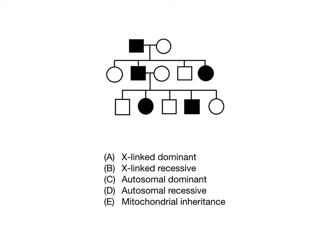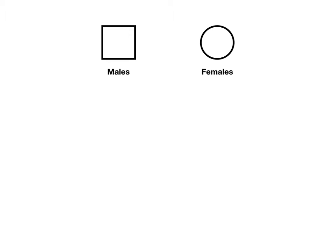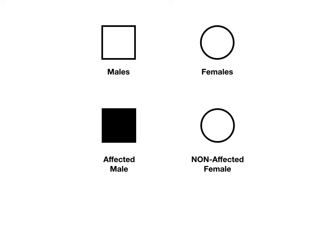Before we get into my system, we need to start with how pedigrees work. If you already know this, it will be a very rapid review, but just in case you're starting from square one — squares represent males and circles represent females. Whether the square or circle is colored in tells you whether they are affected. A colored-in square is an affected male; a white circle is a non-affected female.